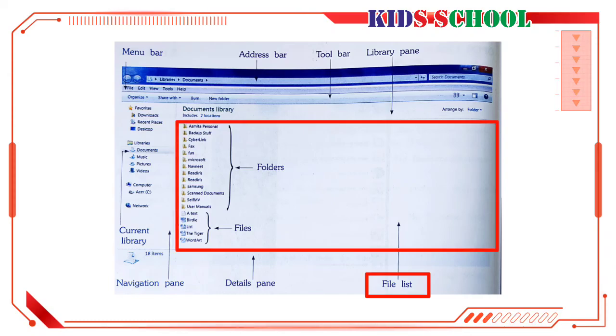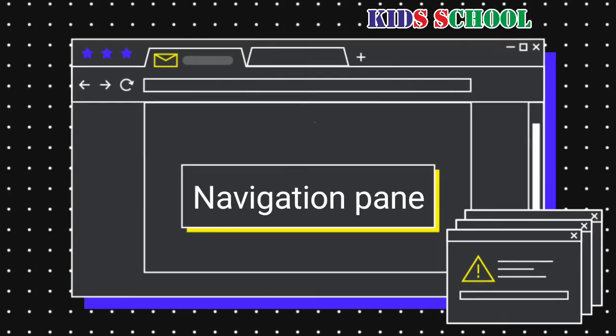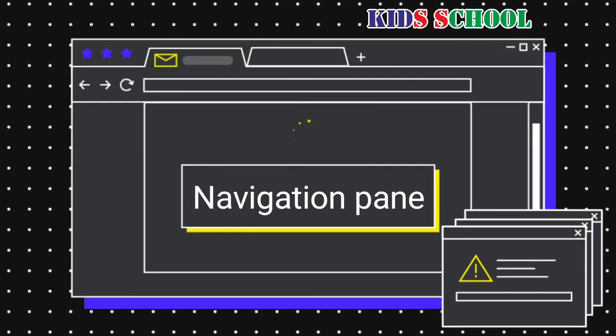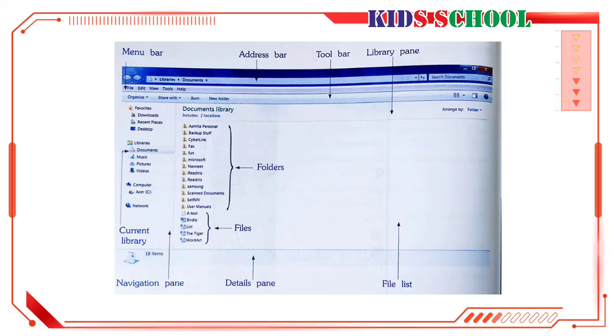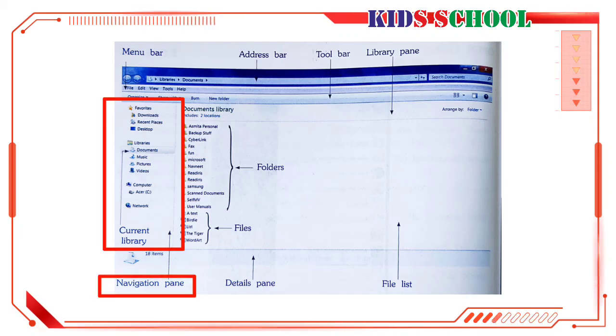File List: The file list shows the list of files and folders in the current folder or library. You can open a file or folder from this list.